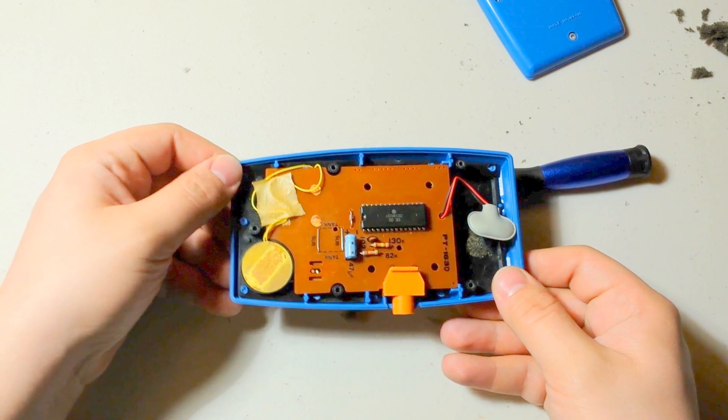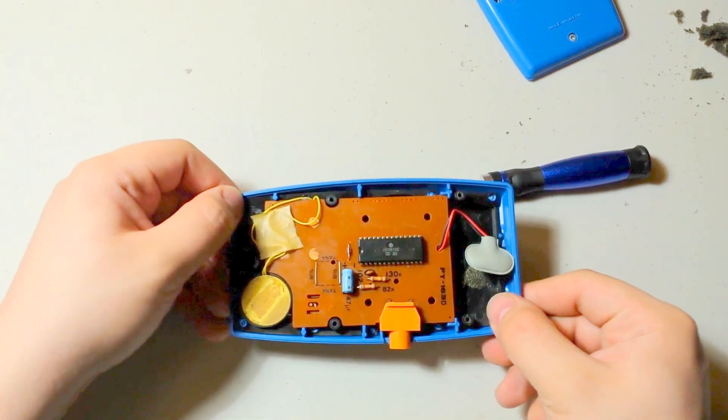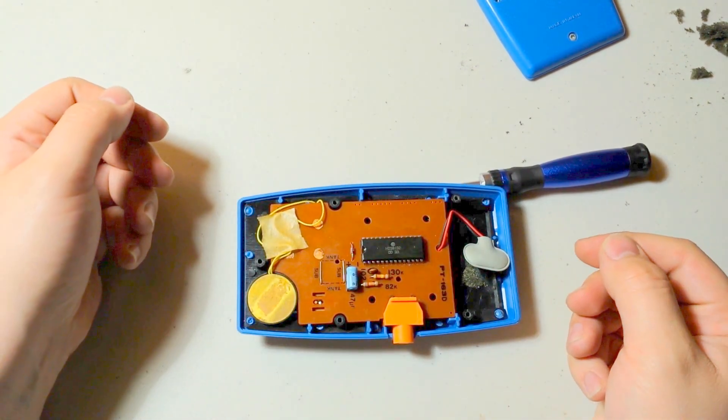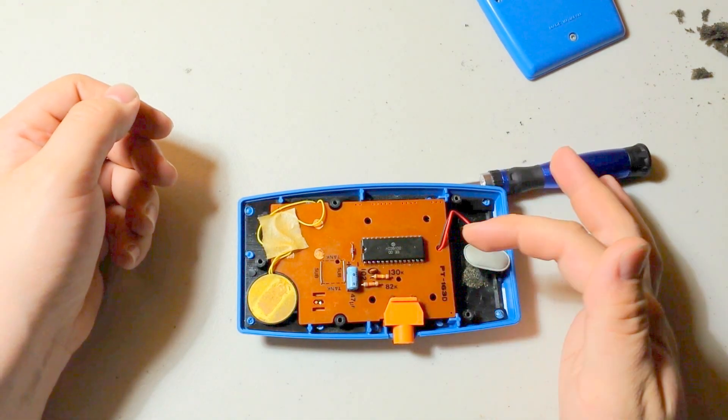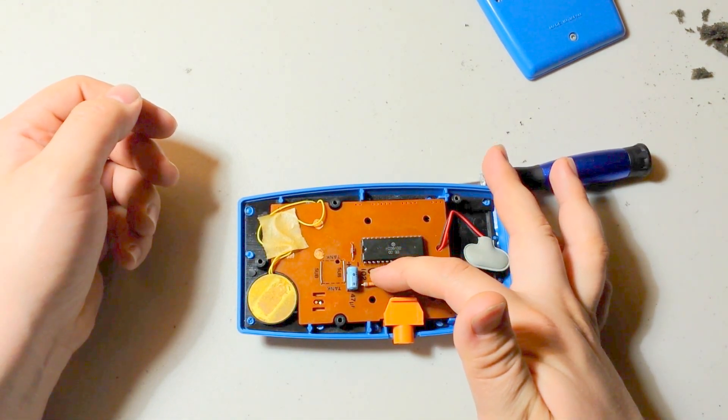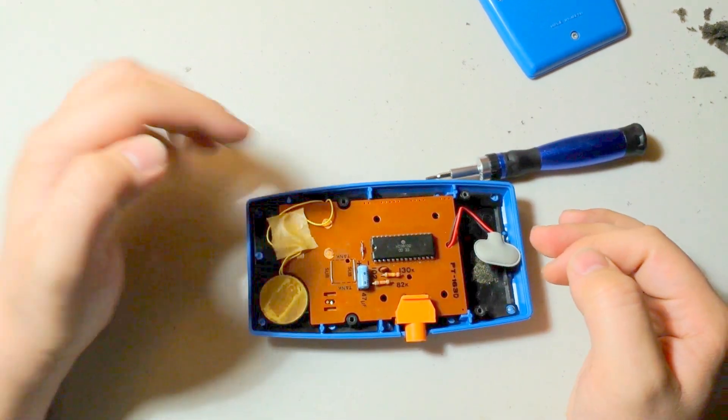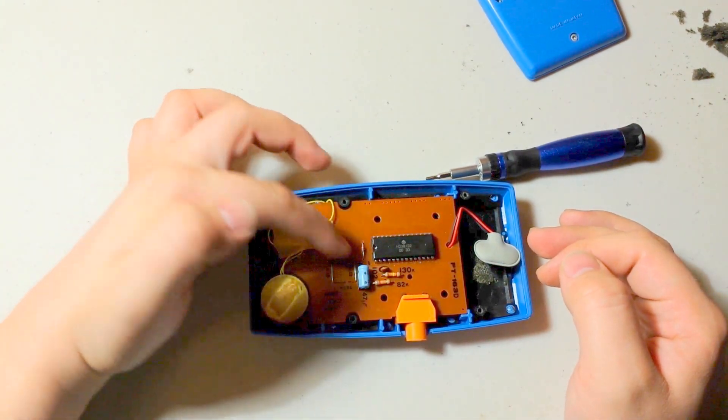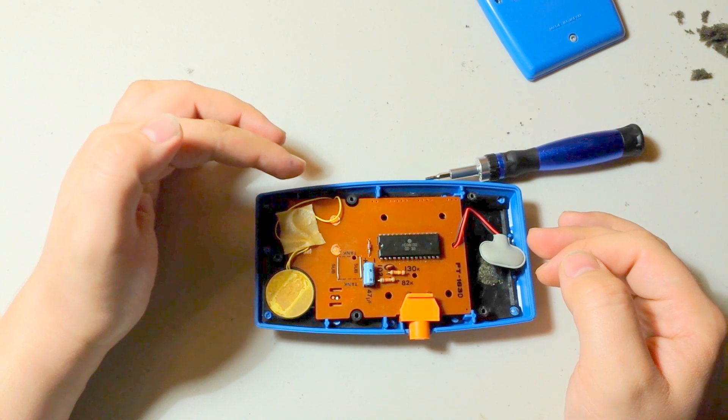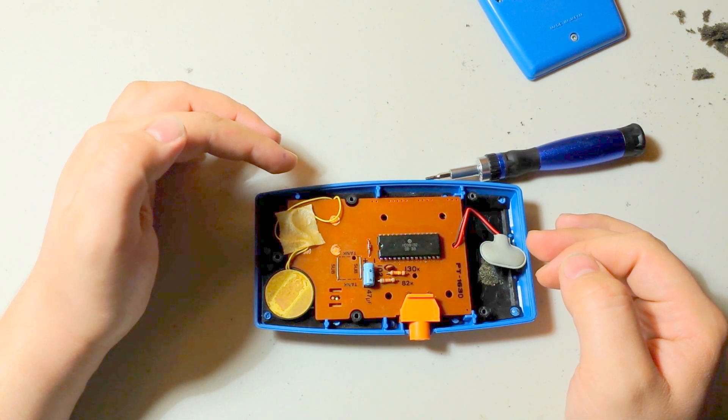And that is some very old school circuitry right there. Let's see, what do we have here? We have two resistors, a little ceramic capacitor, I believe that is, an electrolytic capacitor.